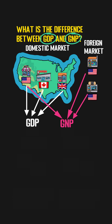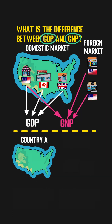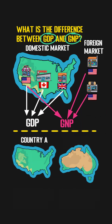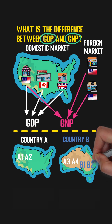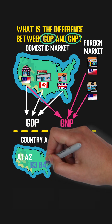For example, there are two countries, Country A and Country B. Country A has two domestic companies, A1 and A2, and two foreign companies, A3 and A4. Similarly, Country B has two domestic companies, B1 and B2, and two foreign companies, B3 and B4.